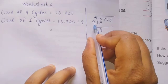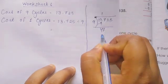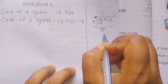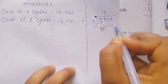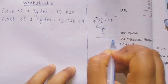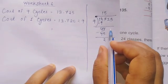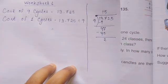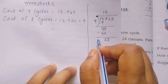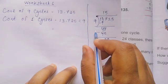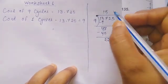3 minus 9 we cannot subtract, so we borrow: 13 minus 9 equals 4. 4 is less than 9, so we bring down the next digit 7, making 47. 9 times 5 is 45. Subtract: 47 minus 45 equals 2. 2 is less than 9, so we bring down the next digit 2, making 22. Multiplication table of 9: 9 times 2 is 18.